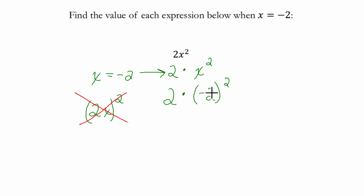How do we deal with this? Well, negative 2 to the second means negative 2 times negative 2, which is 4. And 2 times 4 is 8. And that's our answer. Thank you.